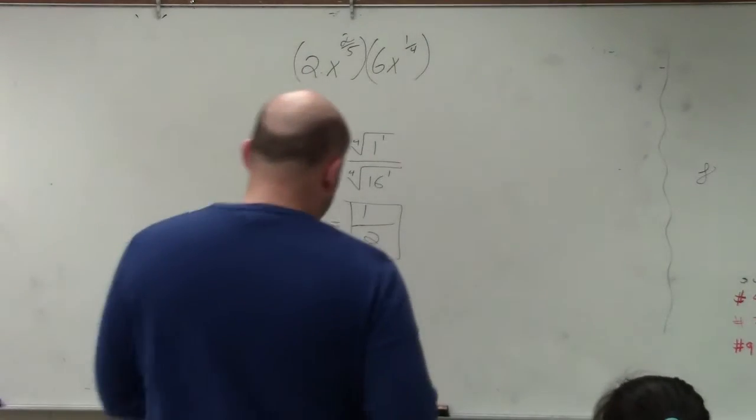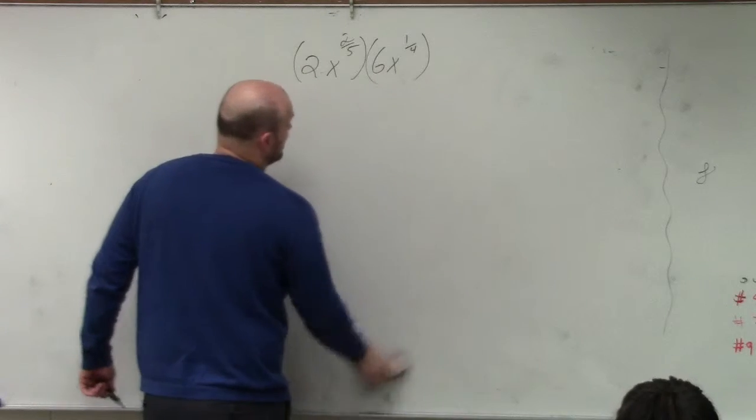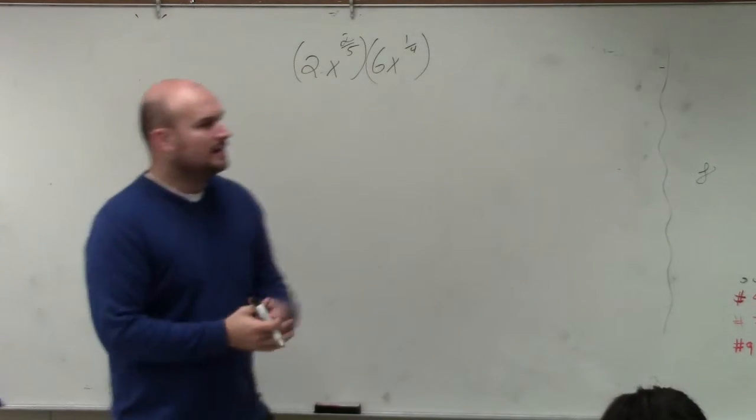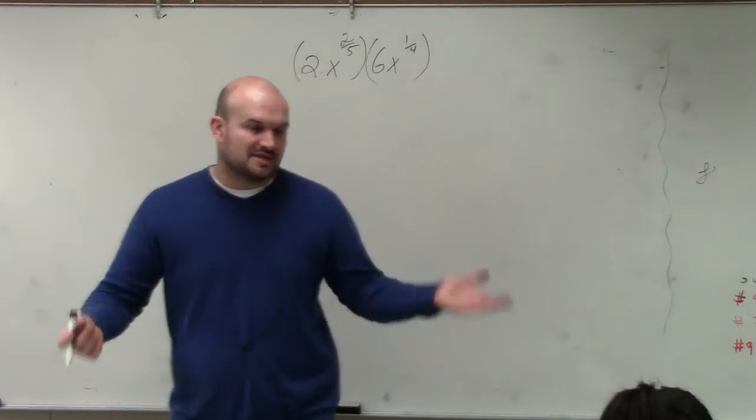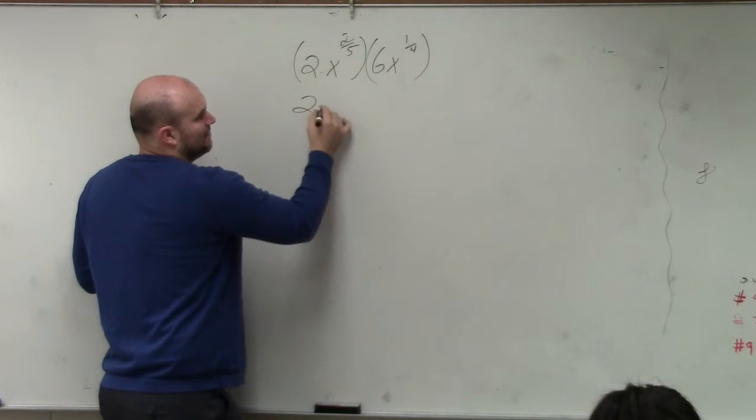So in this example, again, going back through our rule, this one we're going to use the power rule. Now we can only multiply numbers times numbers and exponents by exponents. So in this case, I'm just going to separate this just to break it up using the rule.